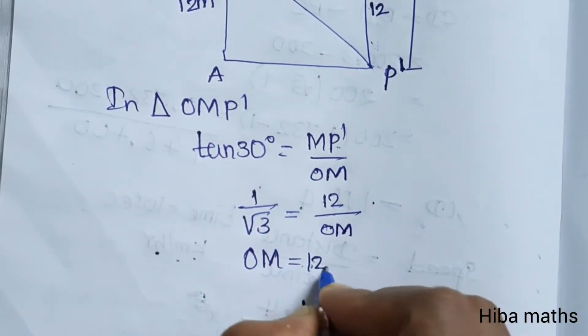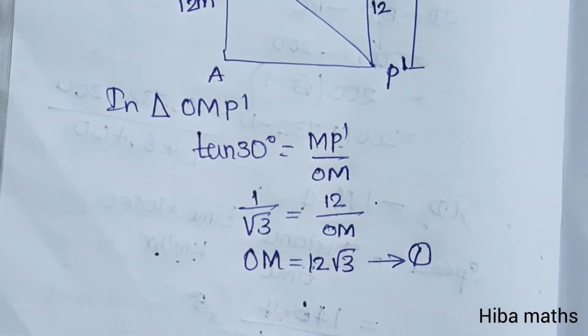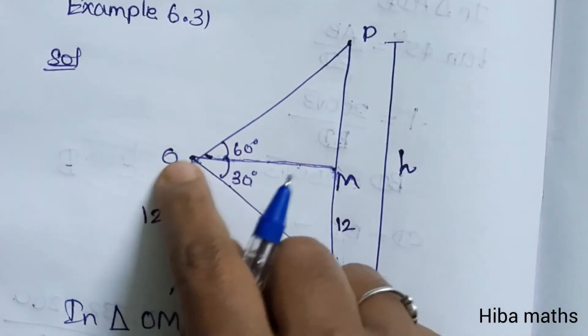Now we take triangle OPM. In triangle OPM, tan 60 degrees is equal to opposite by adjacent.